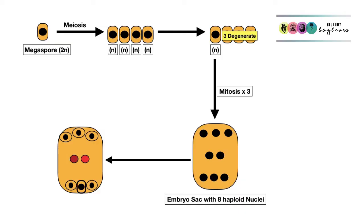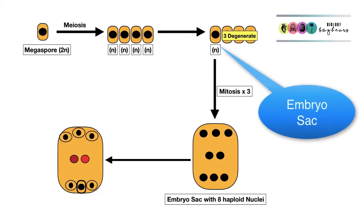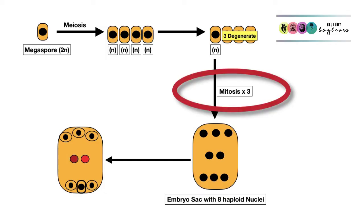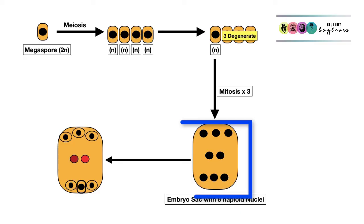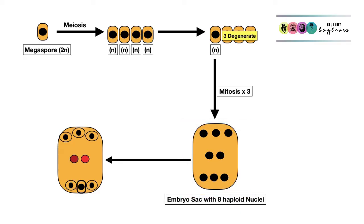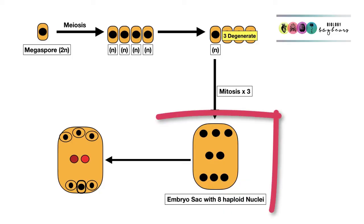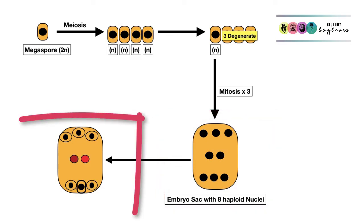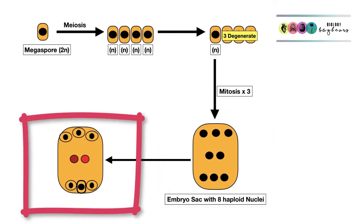This one remaining haploid cell is now known as the embryo sac, and its nucleus will undergo mitosis three times — three rounds of mitosis — to produce this large cell, the embryo sac, with eight haploid nuclei. Six of these nuclei will be surrounded by their own membrane, and two will not.